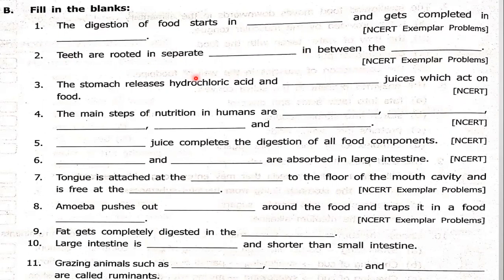Third question: the stomach releases hydrochloric acid and DASH juices which act on food. The stomach releases hydrochloric acid, mucus, and also digestive juices. So the answer here is digestive juices.